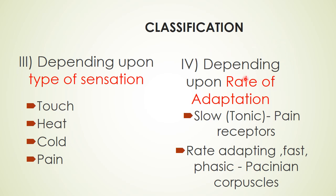Another very important classification is based on rate of adaptation. Adaptation means that with continuous stimulation, some receptors respond and adapt very rapidly — not discharging at the same frequency as before — while others continue to discharge as long as the stimulus is present. Tonic (static) receptors include pain receptors, since pain represents an emergency requiring continuous conscious awareness — a protective phenomenon. Phasic (rapidly adapting) receptors adapt quickly.